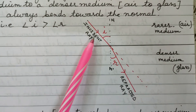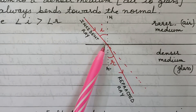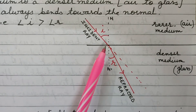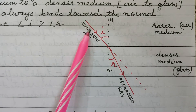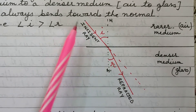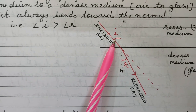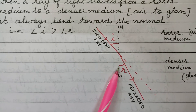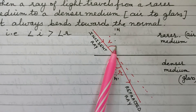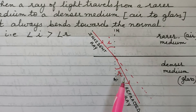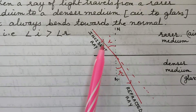We show a ray incident obliquely onto the surface of separation. The ray would have gone straight if there were no change in medium, but because there is a change from air to glass, the ray of light bends towards the normal. This is the normal I've drawn. So the ray bends towards the normal, meaning the angle of incidence is greater than the angle of refraction. The angle of refraction is the angle which the refracted ray makes with the normal, and in this situation it will be less than the angle of incidence.